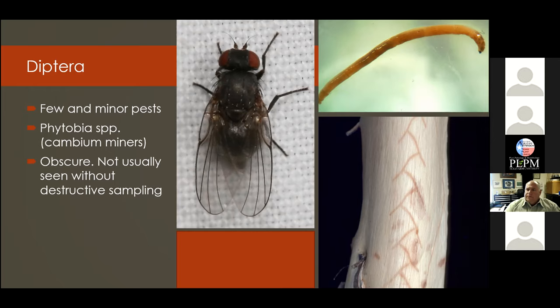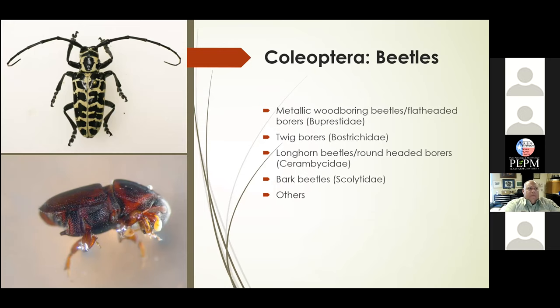Our flies — Diptera — actually do cause some tree damage as boring pests. They'll get in under the cambium and mine it a little bit, but their damage is very limited in scope. You can see it only by doing some destructive sampling — cutting branches off and peeling bark back. In about 25 years in the forest pest business, I've had one call about Phytobia causing damage on some trees and it was very minor, with no action actually taken. So it's not really something we worry about.